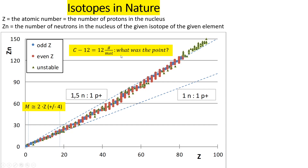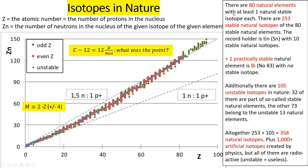So we can really ask the question: what was the point of this definition of the Avogadro number by the SI system? We see there was practically no point. The only consequence is that you must remember that nine-digit number for the Avogadro number instead of a one-digit number. But let's move on.